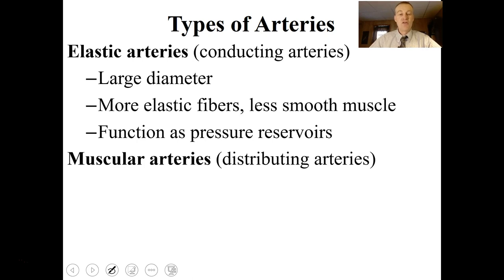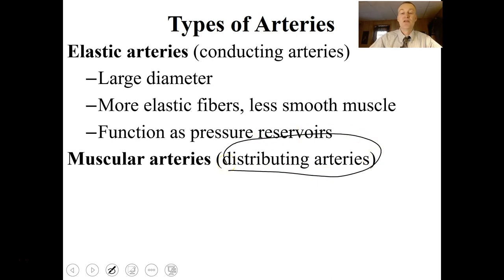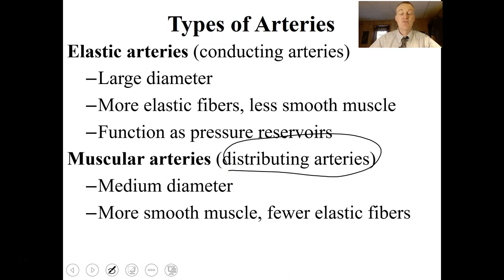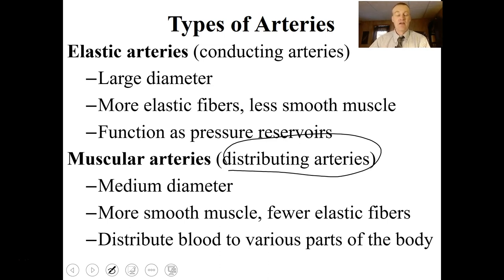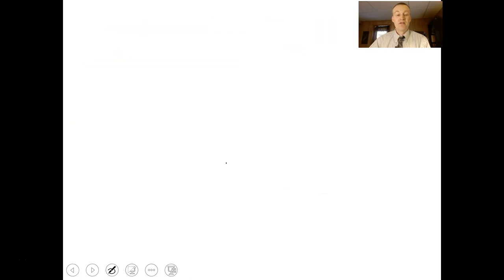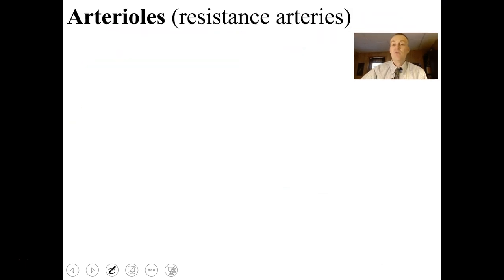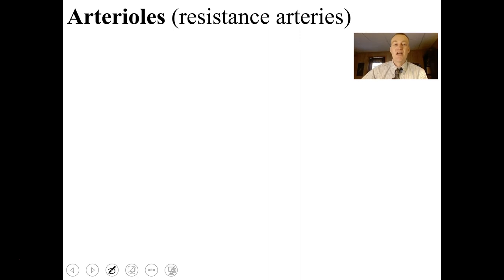Another type of artery further downstream are distributing arteries, which distribute blood through all the body. They have a relatively medium diameter, much more smooth muscle tissue, and fewer elastic fibers. They distribute blood to all parts of the body and will eventually connect to the arterioles.